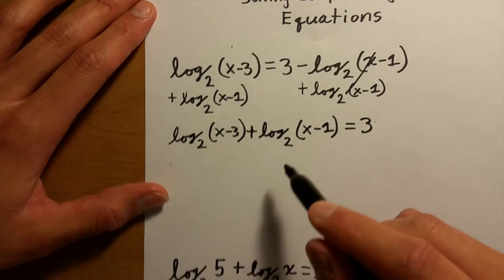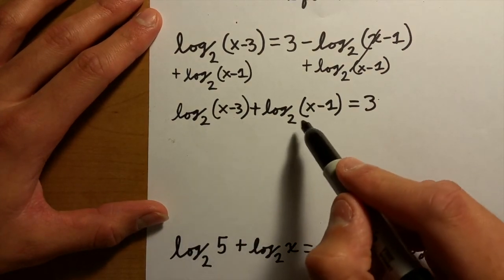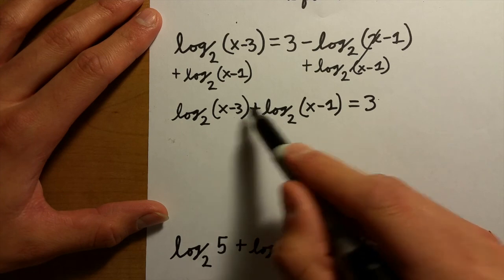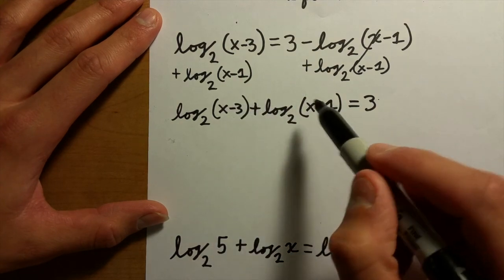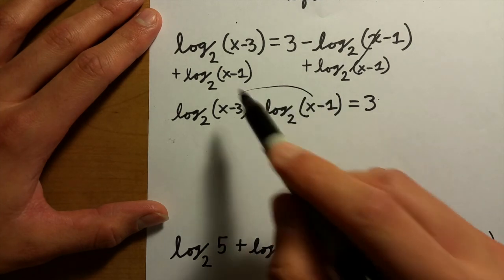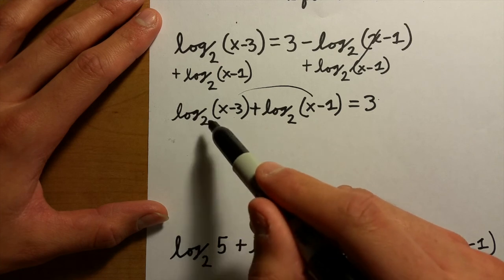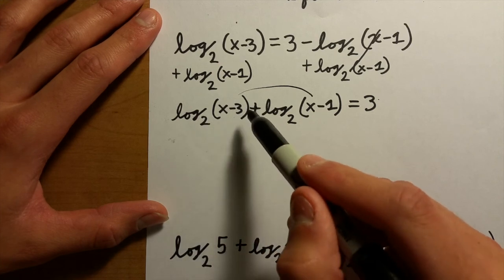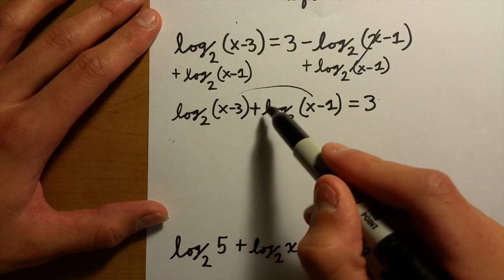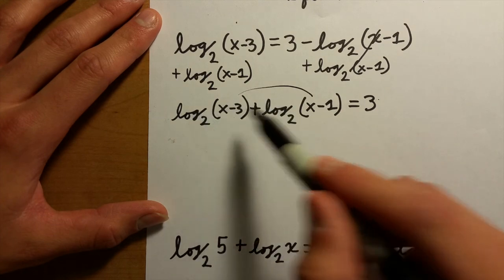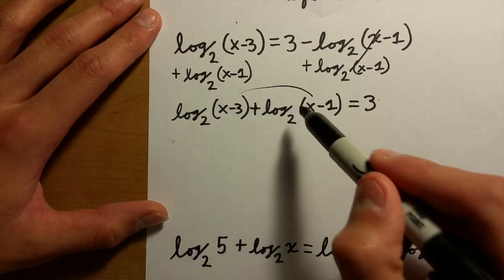If you remember the rules of logarithms, if they have the same base and they're being added together, they're essentially being multiplied. So these two are going to be multiplied by each other in a single logarithm of base 2: (x-3) times (x-1). If this was a negative sign it would mean division, but since it's positive it means multiplication.